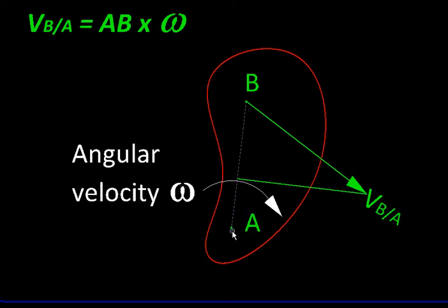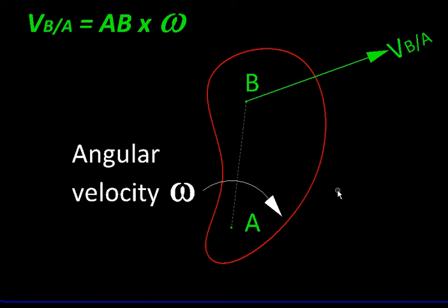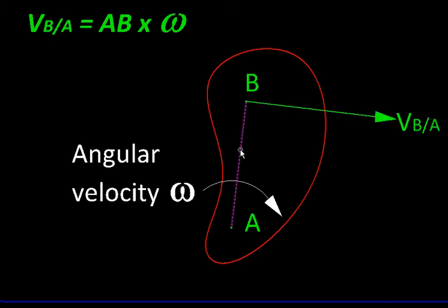But a distance between two particles of a rigid body can never alter, and therefore the direction of velocity like this is not possible. For the same reason, even this direction is not possible because that will separate the two points AB, again an impossibility for a rigid body.